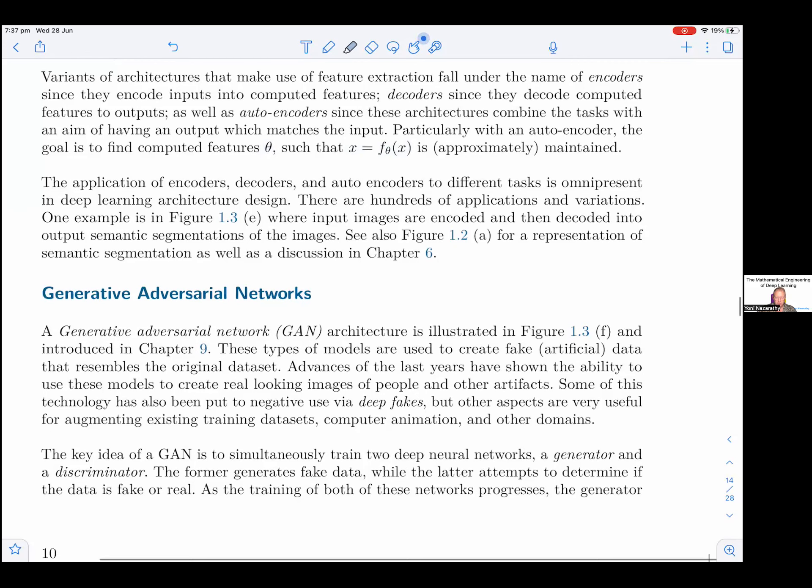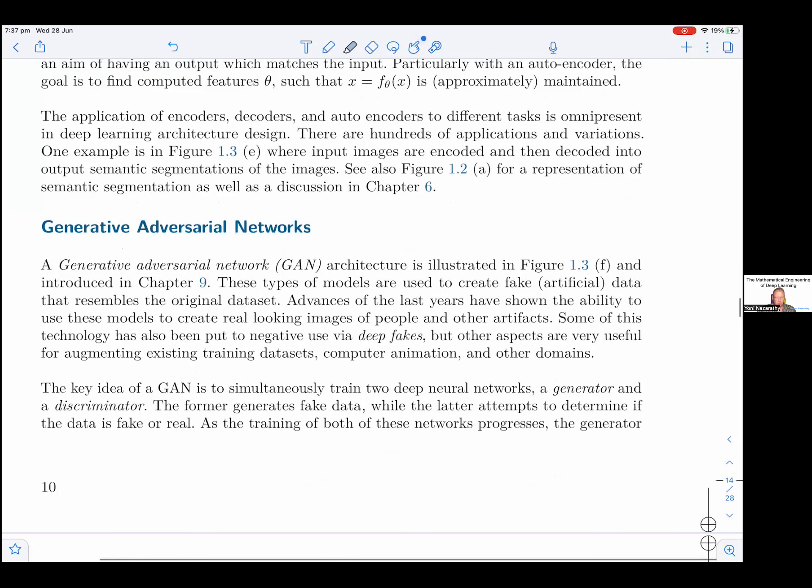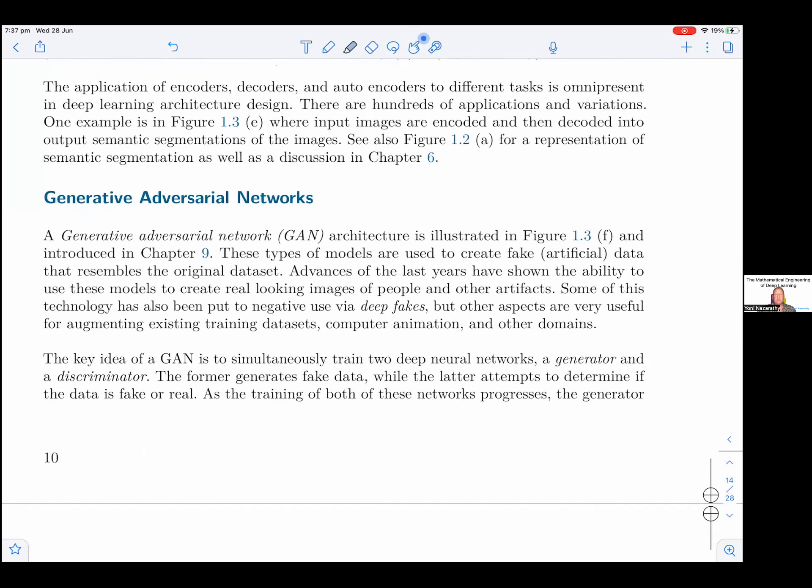The application of encoders, decoders, and autoencoders to different tasks is omnipresent in deep learning architecture and design. There are hundreds of applications and variations. One example is in figure 1-3-E where input images are encoded and then decoded into output semantic segmentation of the images. See also figure 1-2-A for representation of semantic segmentation as well as a discussion in chapter 6.